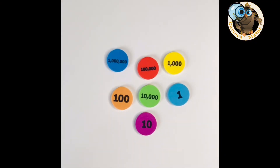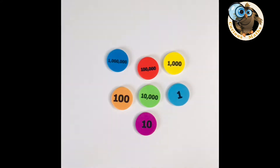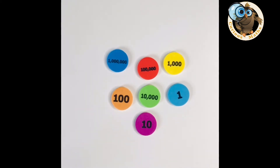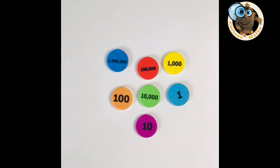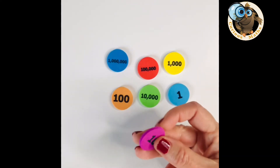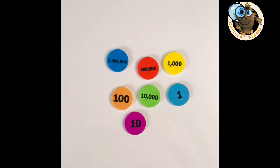Number four: place value counters. These haven't been around that long — one of those resources where you think, why didn't I invent that? The great thing is you can use numbers like a million and a hundred thousand and have something to represent them by. If children still need a lot of counting, these won't help as there aren't 10 parts visible. But they're great for multiplication, division, and place value — and you can grab a handful and see how much you've got. The foam ones are much cheaper online than the plastic ones.